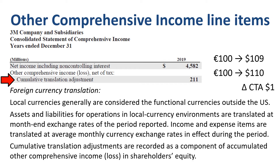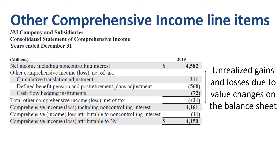Other accounts in other comprehensive income have a similar story. There is a value change somewhere in the balance sheet that has to be offset in equity in order for the balance sheet to balance.